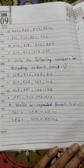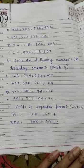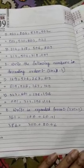Write in expanded form 161. The answer is 100 plus 60 plus 1. 386. And the answer is 300 plus 80 plus 6.